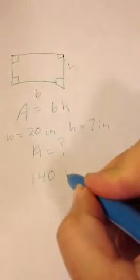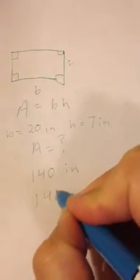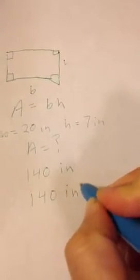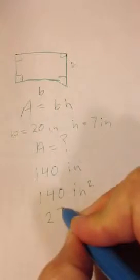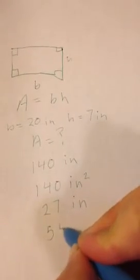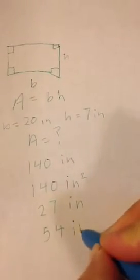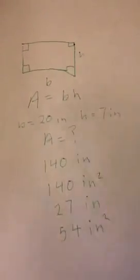And to make this a little tough, I'm going to make it multiple choice. We're going to have 140 inches, 140 inches squared, 27 inches, and 54 inches squared. All right, so pick what you think the right answer is.